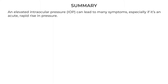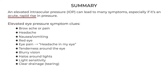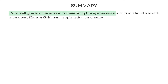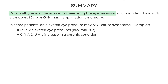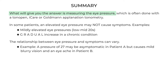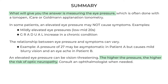In summary, an elevated intraocular pressure can lead to many symptoms, especially if there's an acute rapid rise. Symptom clues include brow ache or pain, headache, nausea, or vomiting. Measuring the eye pressure — often with a Tono-Pen, iCare, or Goldmann applanation tonometry — will give you the answer. In some patients, elevated eye pressure may not cause symptoms, such as when the increase has been chronic or pressures are mildly elevated. A pressure of 27 may be asymptomatic in patient A but cause mild blurry vision and eye ache in patient B. Elevated eye pressure can be vision threatening — the higher the pressure, the higher the risk of optic neuropathy and ultimately vision loss. Consult an ophthalmologist when needed.